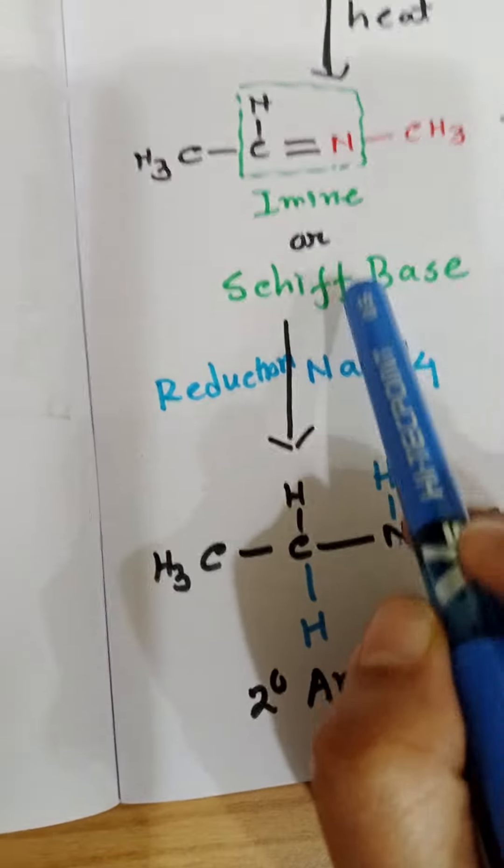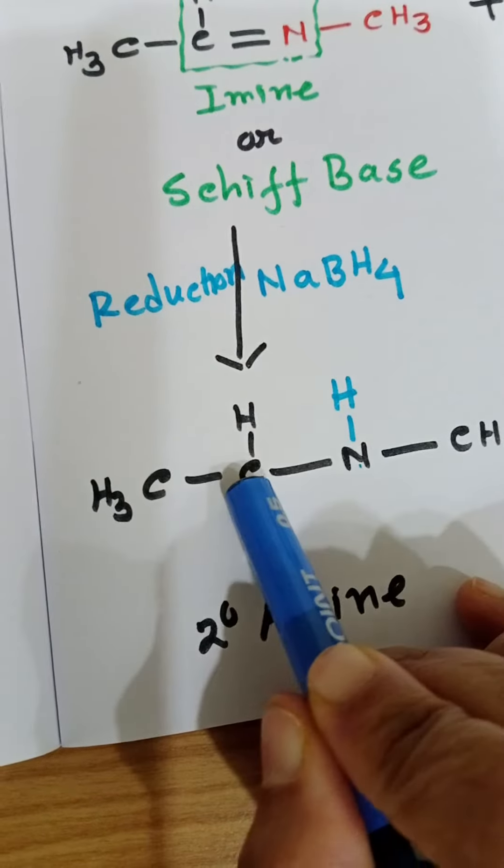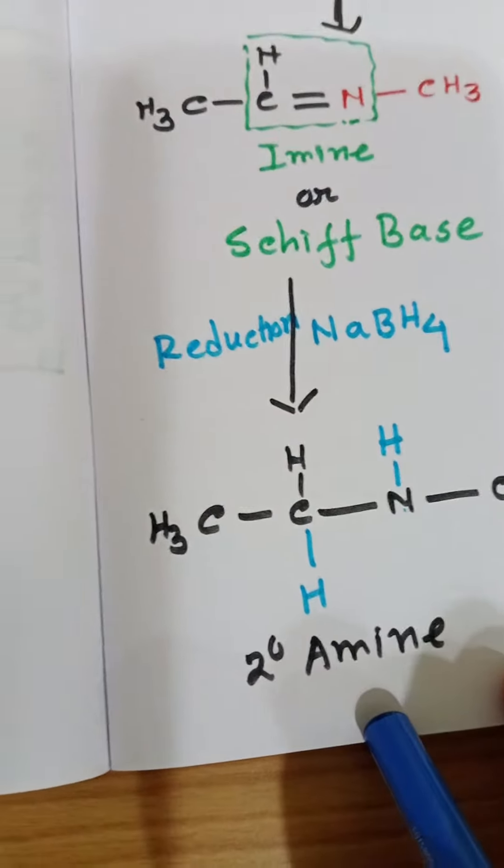Due to reduction of imine, we are getting 2 degree amine because this nitrogen is connected with two carbons. That's why it is a 2 degree amine.